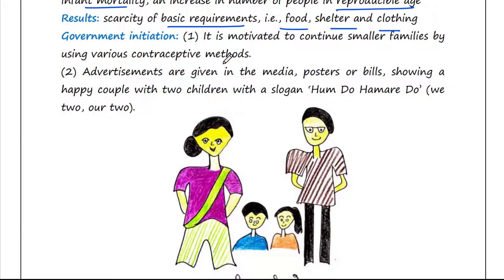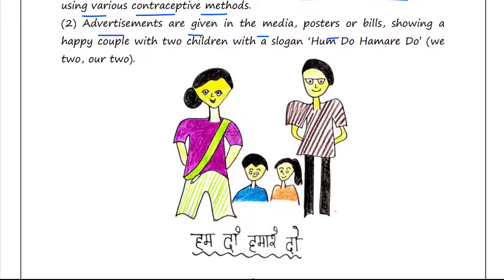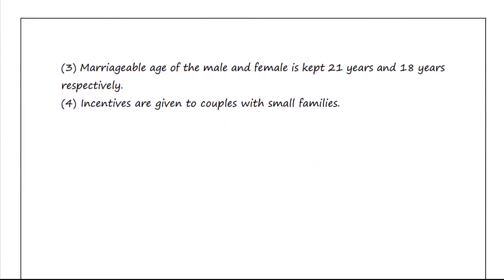Therefore, our government was forced to take up serious measures to check this population growth rate. In order to maintain population stabilization, it is motivated to continue smaller families by using various contraceptive methods. Advertisements are given in the media — posters or bills showing a happy couple with two children with the slogan 'Hum Do, Humare Do'. And the marriageable age of the male and female is kept at 21 years and 18 years respectively.